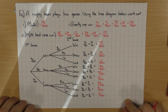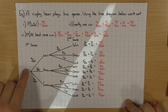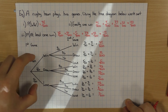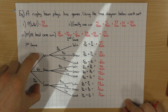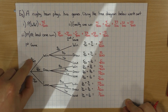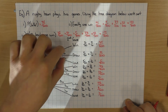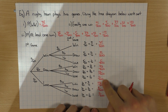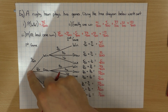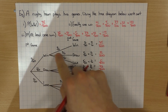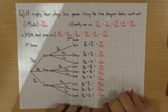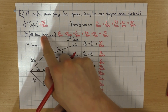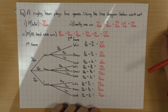If you have three outcomes, you just draw an extra branch and do exactly the same thing. Key things to remember: branches add up to one, all final outcomes add up to one, and to find probabilities you multiply across the branches. When answering questions, be really careful of the language used — 'exactly one', 'at least one' — and make sure you only pick the branches relevant to the question. Hopefully that helps, guys.